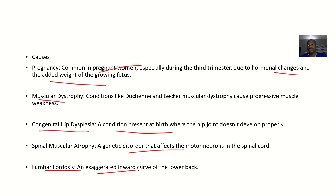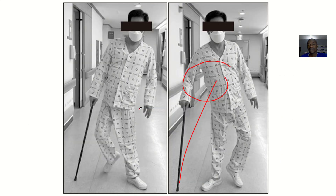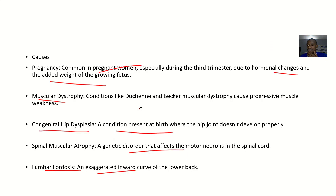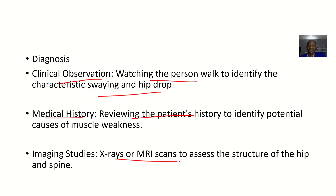For diagnosis, clinical observation involves watching the person walk and identifying characteristics such as swaying and hip drop. Medical history review helps identify potential causes of the muscle problem. Imaging studies — X-rays or MRI scans — can assess the structure of the spine and the hip.